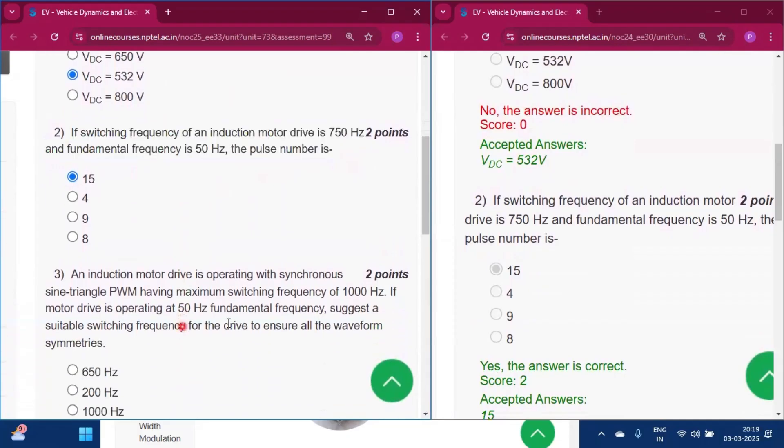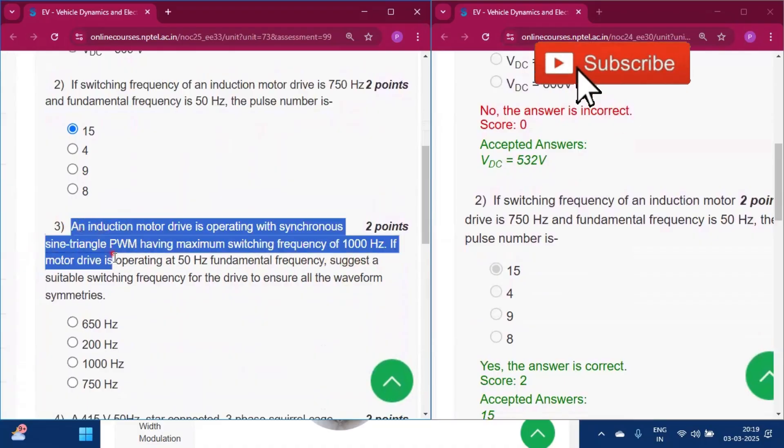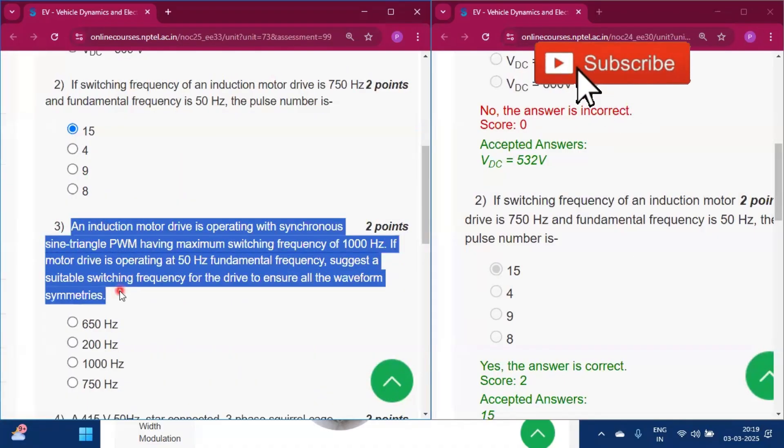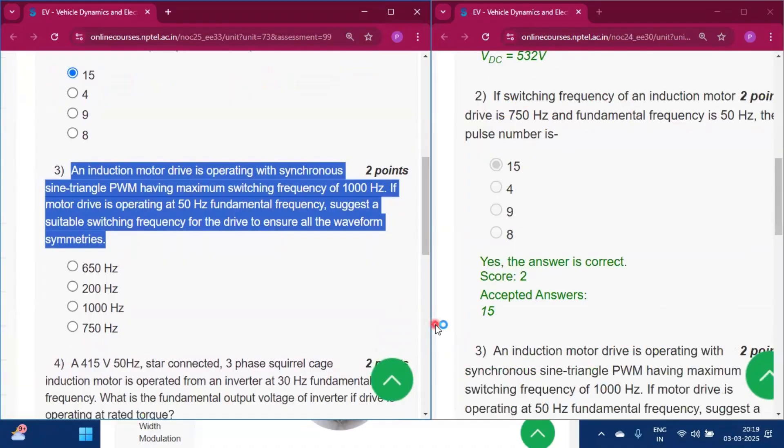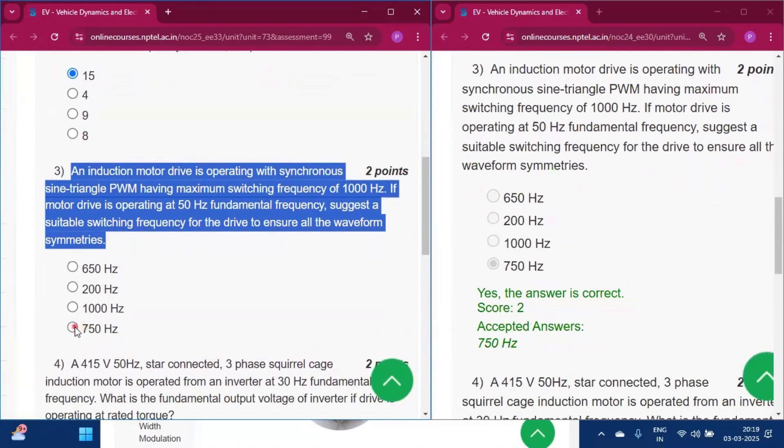Question 3: An induction motor drive is operating with synchronous sine-triangle PWM having maximum switching frequency of 1000Hz. If the motor drive is operating at 50Hz fundamental frequency, suggest a suitable switching frequency for the drive to ensure all waveform symmetries. The answer is 750Hz, option D.